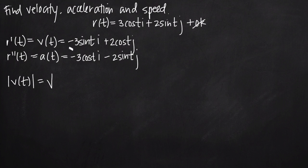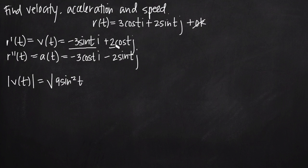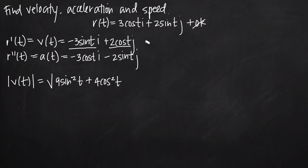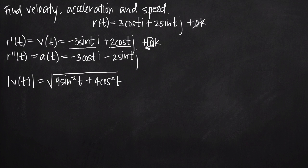We always follow the same formula for magnitude: take the square root of the sum of the squares of each coefficient. The first coefficient is -3sin(t); squaring it gives positive 9sin²(t). Then we add the square of the next coefficient, 2cos(t), which gives 4cos²(t). There's a plus 0k term for the k component, but since it's zero, we don't need to include it.